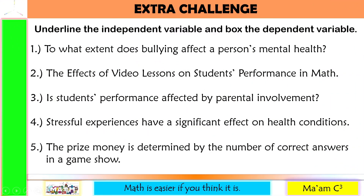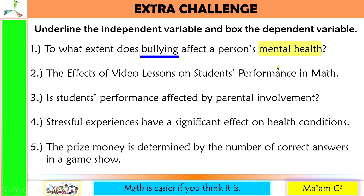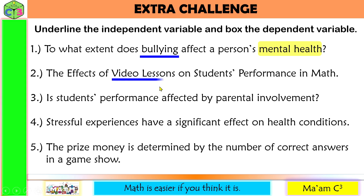Let us do an extra challenge: underline the independent variable and box the dependent variable. Number one: to what extent does bullying affect a person's mental health? The independent variable is bullying, and the dependent variable is mental health. Number two: the effects of video lessons on students' performance in math. The student's performance is dependent on the video lesson, so the independent variable is video lessons and the dependent variable is student's performance.